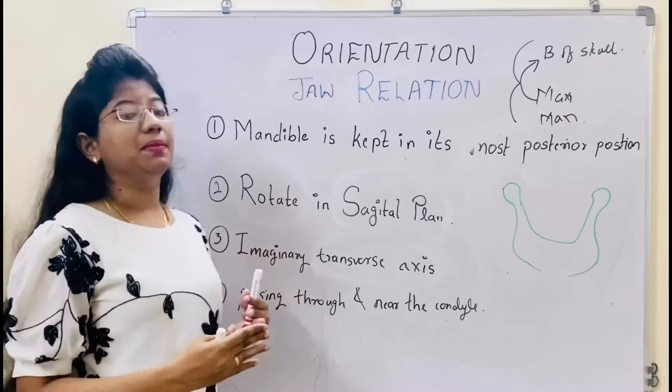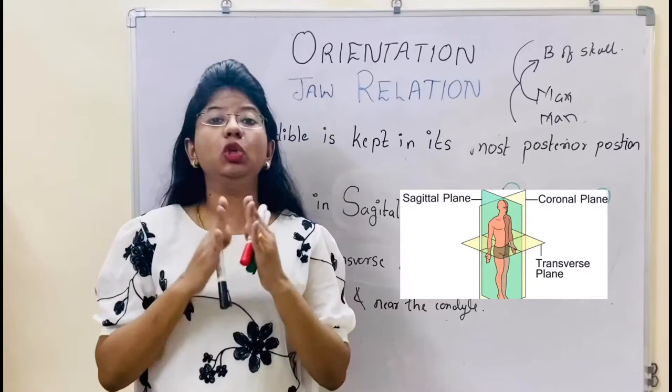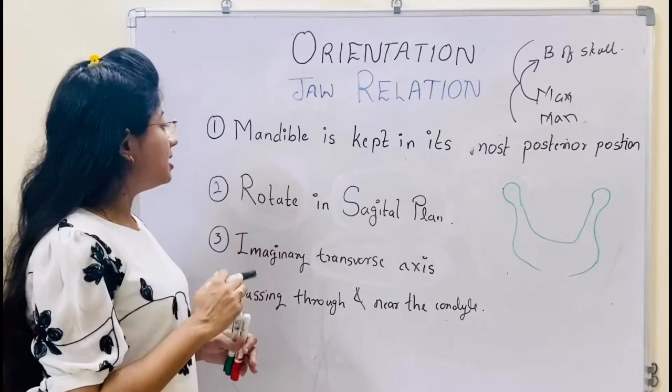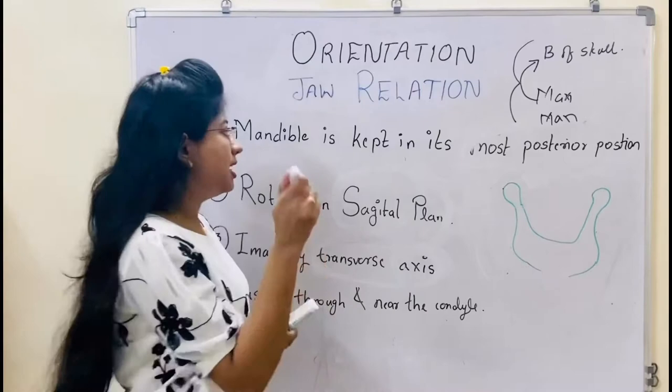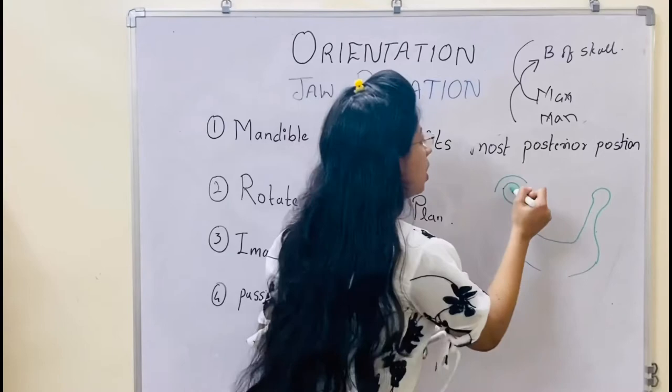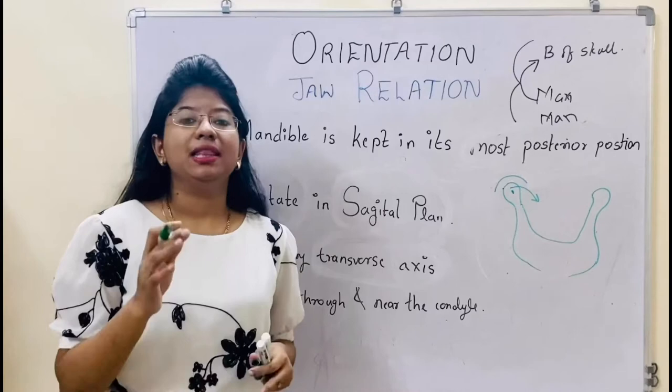What do we mean by sagittal plane? If I divide the body in two halves, that is the sagittal plane. It says it rotates. Rotation means it has movement in that place only — there is no bodily movement. If this condyle is moving, it will move in that place only. It will not shift, it will not translate, it will not bodily move. That means rotation.